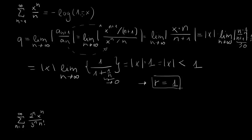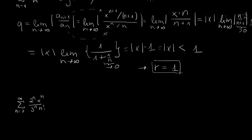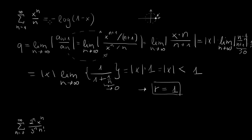An interesting thing to note is that this function has a pole at x = 1. In complex analysis, you can show that poles constrain the radius of convergence. If you imagine a circle around the origin in the complex plane, your radius of convergence is always as large as the distance to the nearest singularity or pole. This is a quick way to see where functions have their singularities if you know the Taylor series equals the function.